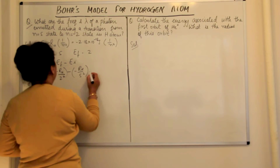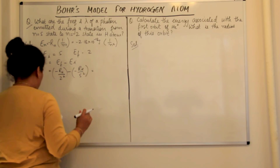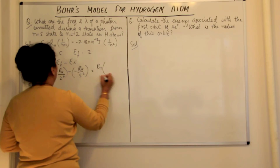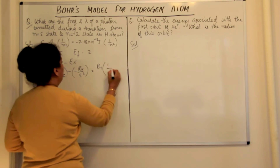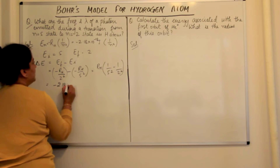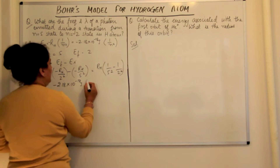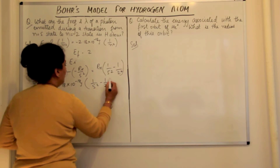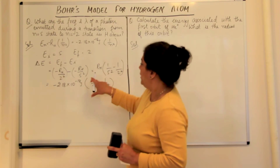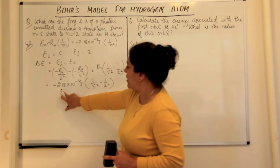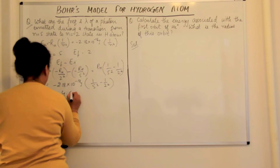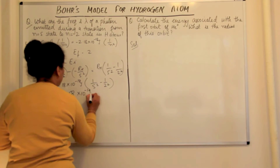Now to remove these negative signs, we flip these and take Rh as common, so it becomes Rh times (1 upon 5 squared minus 1 upon 2 squared). The value of Rh is minus 2.18 × 10⁻¹⁸ joules, multiplied by (1/25 minus 1/4). When you solve this, the answer is equal to minus 4.58 × 10⁻¹⁹ joules.